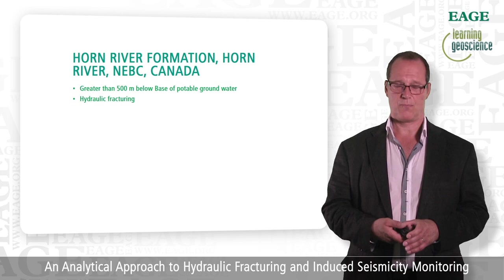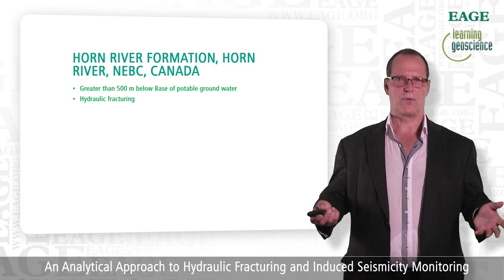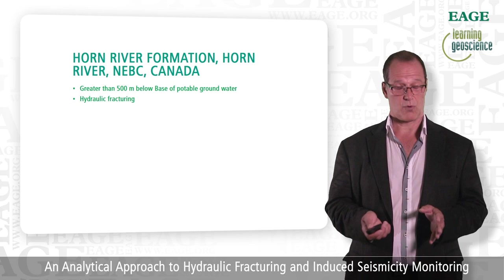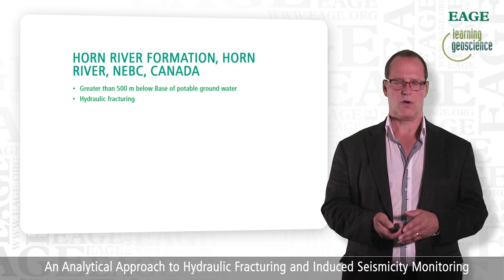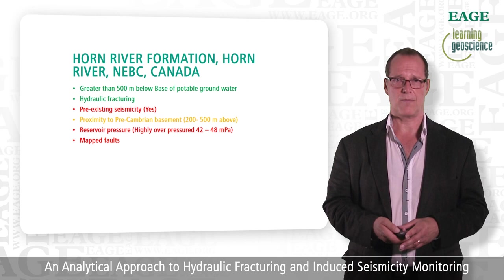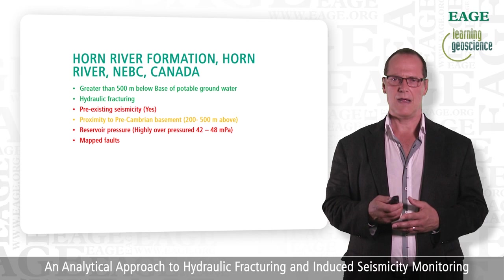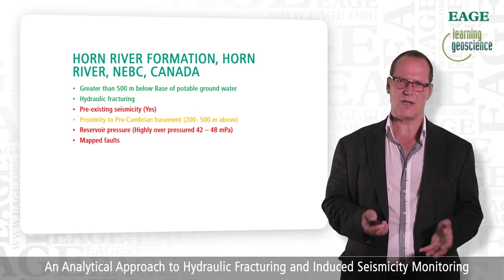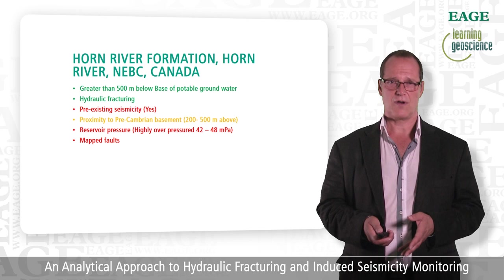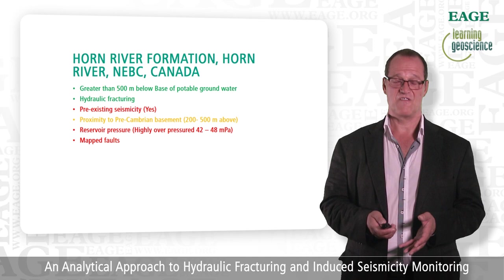Let's go to the Horn River Formation in Northeast BC. The first and most important topic: how close are you to the base of potable water? In this area they're about 500 meters below the base of potable water, and they're involved in hydraulic fracturing, not wastewater injection. Is there pre-existing seismicity? Yes — it's been recorded on the NRCan grid and published in papers and with the government regulator. Proximity to Precambrian basement: it's between 200 and 500 meters, so I put that as orange — it could have an impact but probably doesn't, but you need to pay attention. Reservoir pressure: highly over-pressured at 42 to 48 MPa, with a frack rating over 21 MPa per meter, which is very high. Are there faults? Yes, and they've been mapped.